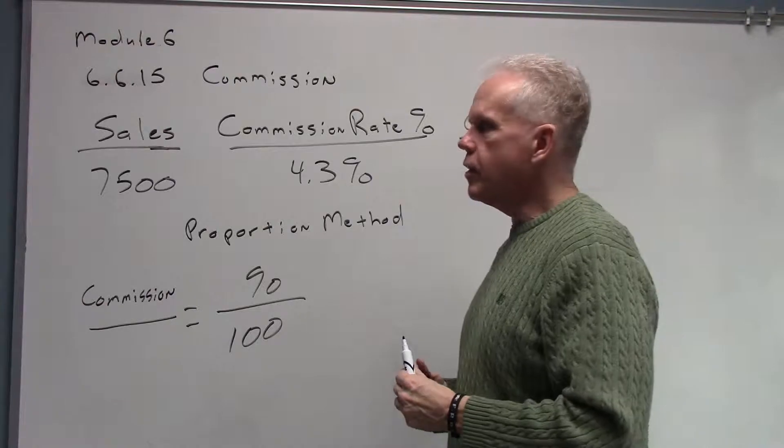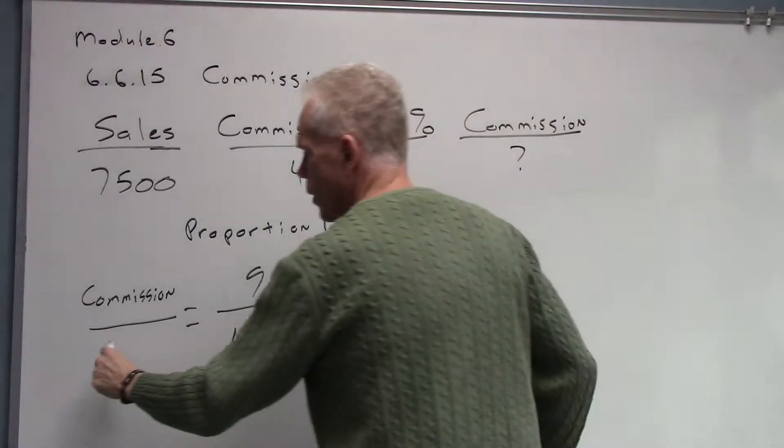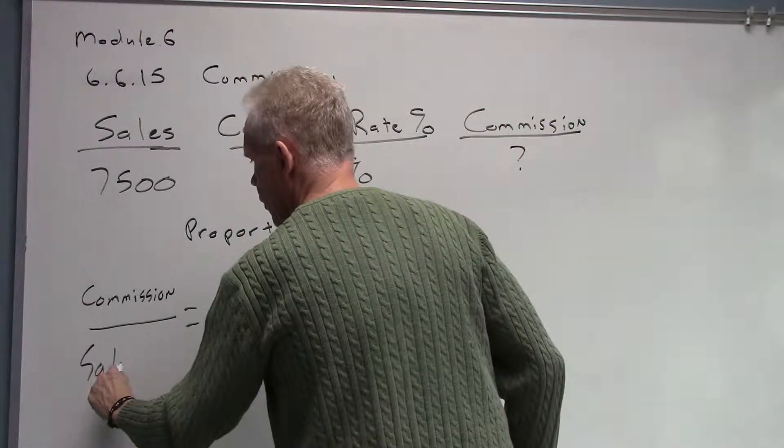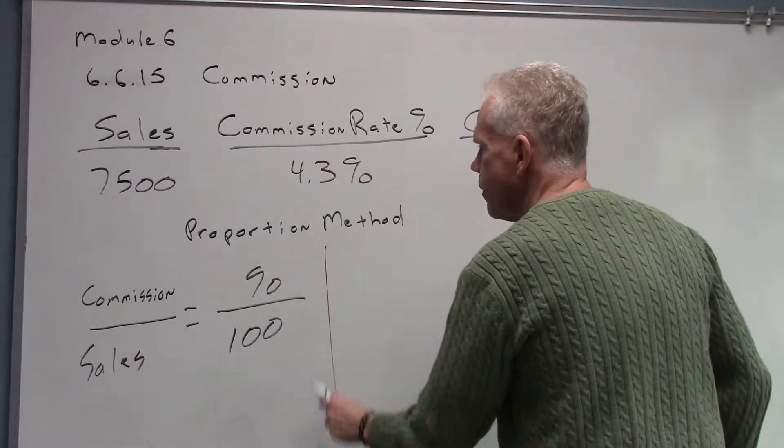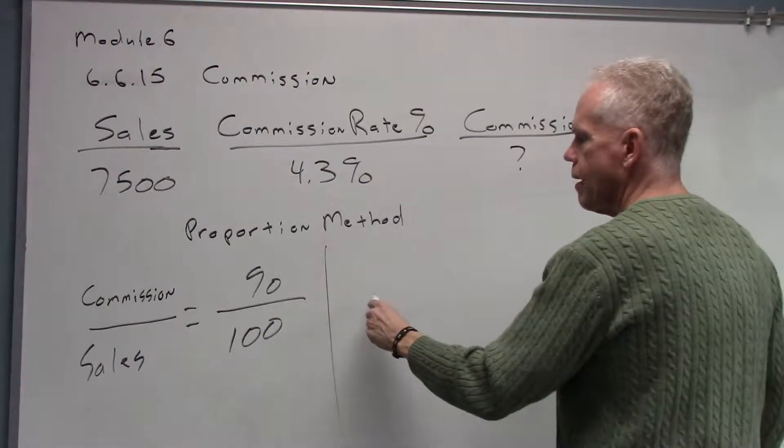In other words, how much the person is going to make for selling what they sold. Then down here are their sales. We're going to take that model and use that model in this problem.